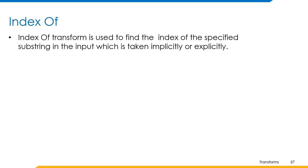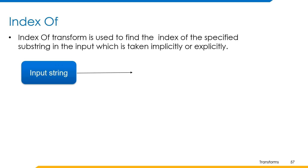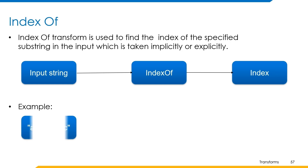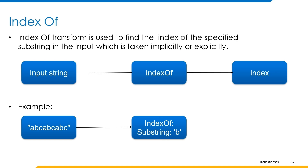Index of transform is used to find the index of a specified substring. If the substring does not match with the input string, it returns minus one. If the substring occurs multiple times, the first occurrence is considered and its index value is returned. We provide the input string and the substring to search for, and receive the location of the specified substring as output. For example, if abc abc abc is passed as input with substring b, then index 1 is returned as output, since the first occurrence of b is at index 1.